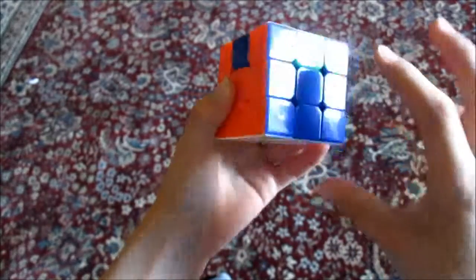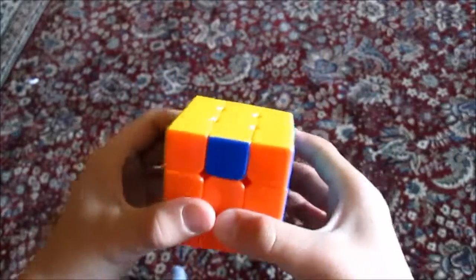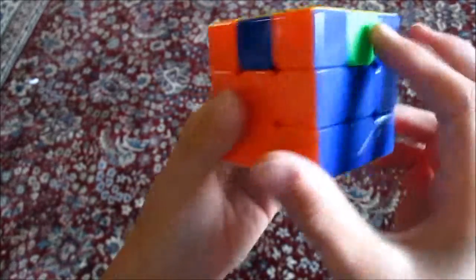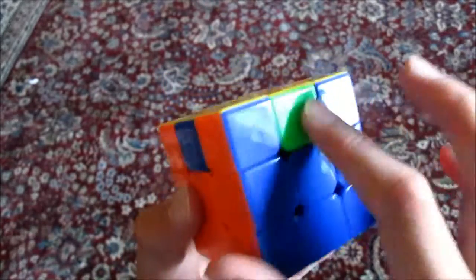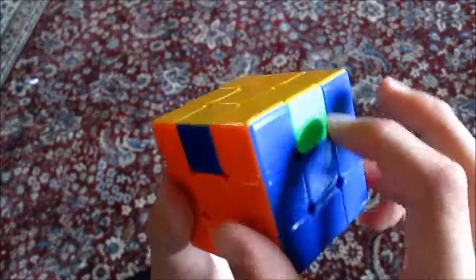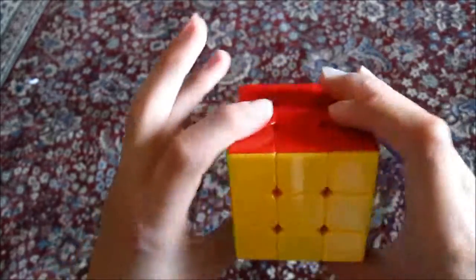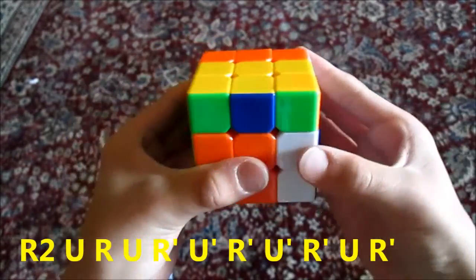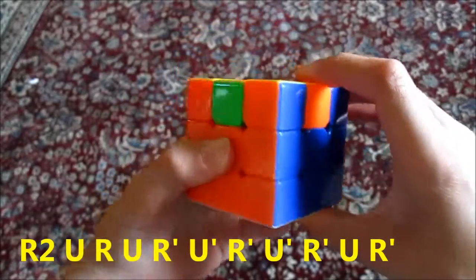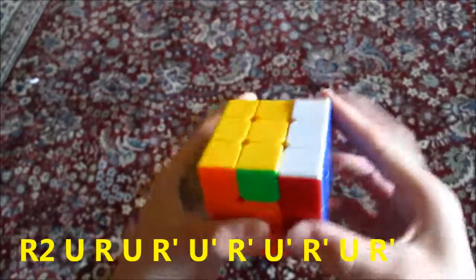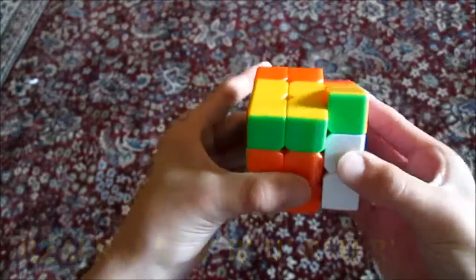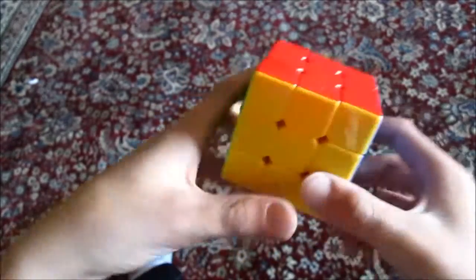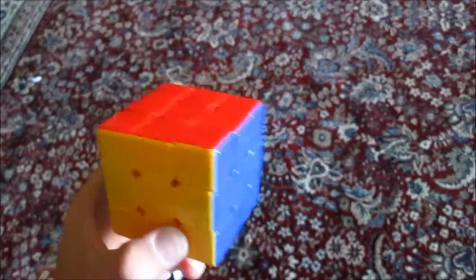And then we have our one side finished. So we can flip that to the back, as always. And then we have to do it two times this time because we need this piece, this blue, it needs to go here. And this is orange because the orange needs to go there. So we have to do this: Right 2, Up, Right Up, Right prime, Right prime, just like that. And then we have to do it again: Right 2, Up, Right up, Right prime, Up prime, Right prime. And that's it. It's pretty simple. Hope you guys enjoyed.